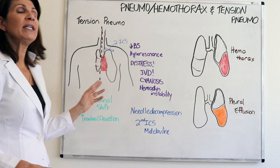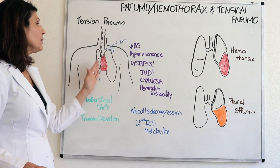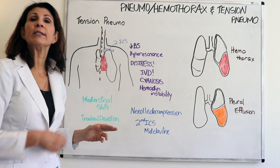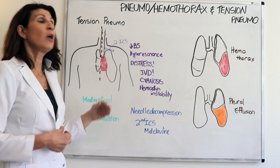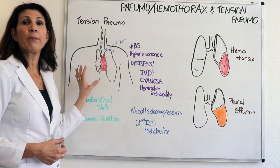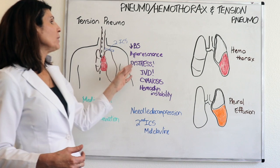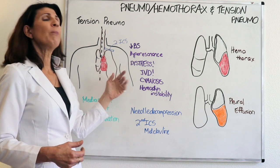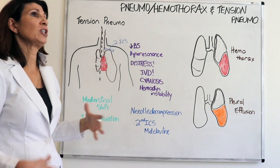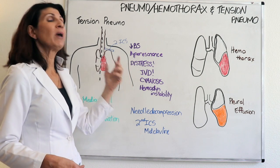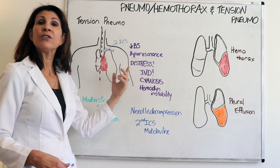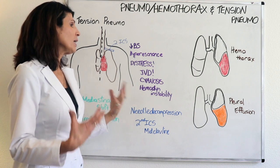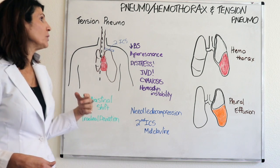You would see something called a mediastinal shift — a shift of the mediastinum from the affected side over to the unaffected side — and also tracheal deviation, which is a deviation of the trachea due to this buildup of air. Assessment findings overlap with pneumothorax: decreased breath sounds on the affected side and hyper resonance to percussion, but in a more extreme form of distress. You would also see increased jugular venous distension due to decreased venous return and compression on the myocardium. The patient would be cyanotic and hemodynamically unstable.